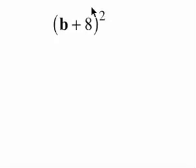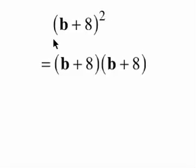So b plus 8 all squared means b plus 8 times b plus 8, so we have to write that out. And then we're going to use our binomial multiplication. Okay, so we're going to FOIL this.